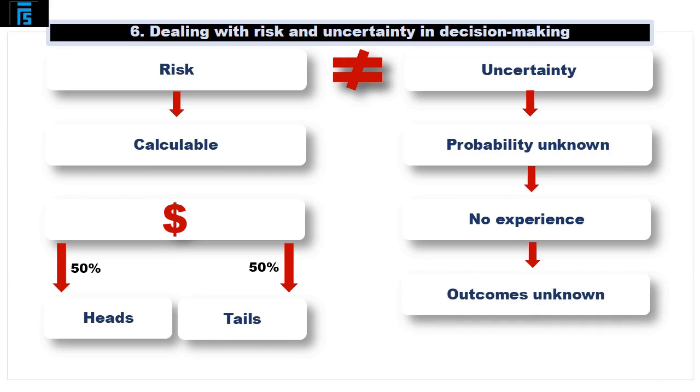Often, one person's uncertainty is another person's risk, depending on the level of experience they each have of the situation.